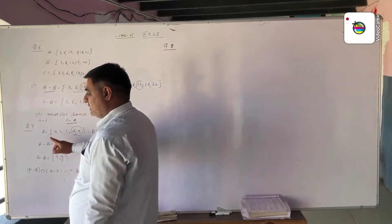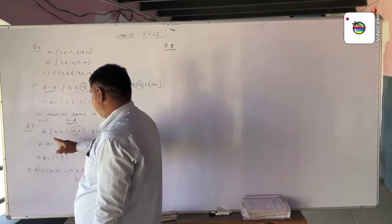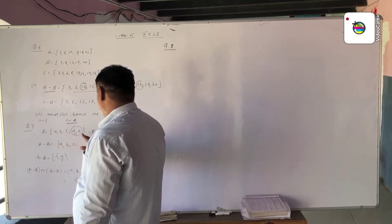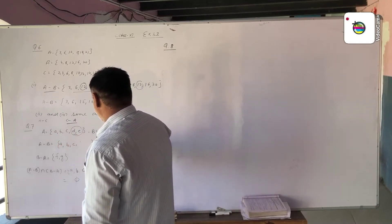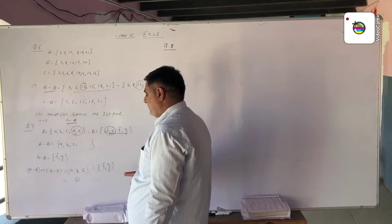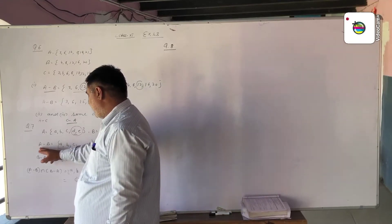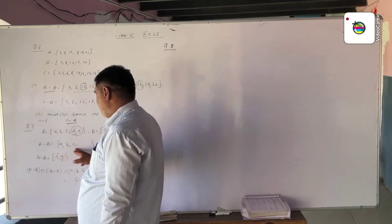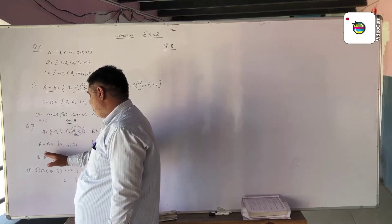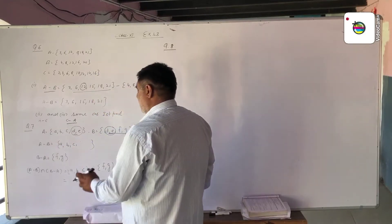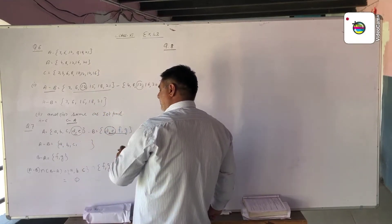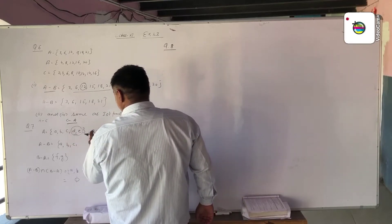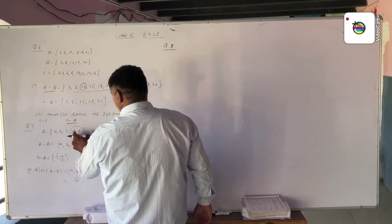In question number 7, set A is given by A, B, C, D, E and set B is the set of D, E, F, G. Now A difference B: we take those elements of A which are not in B. Here D and E are common elements in both A and B.